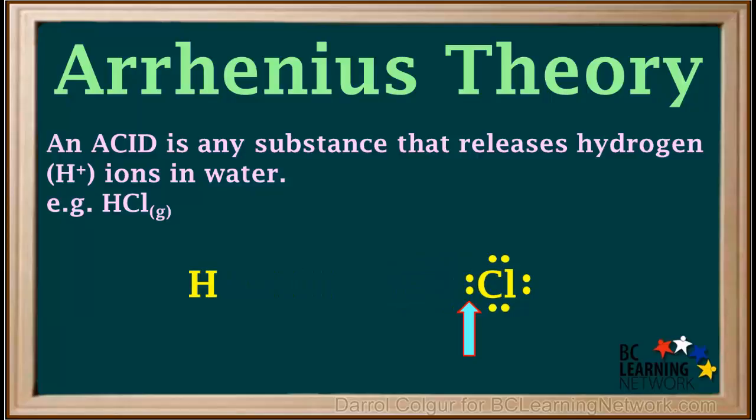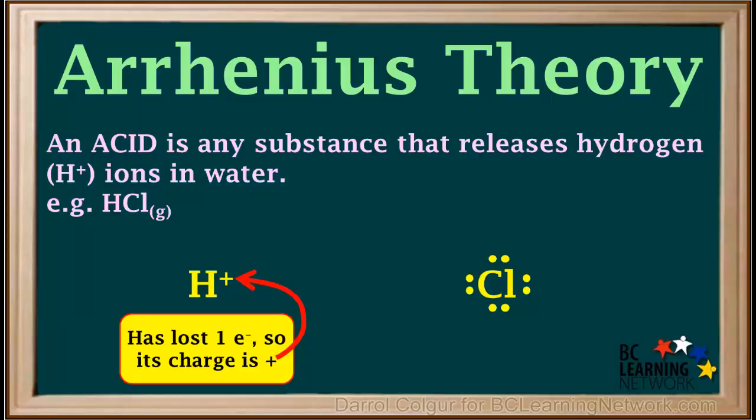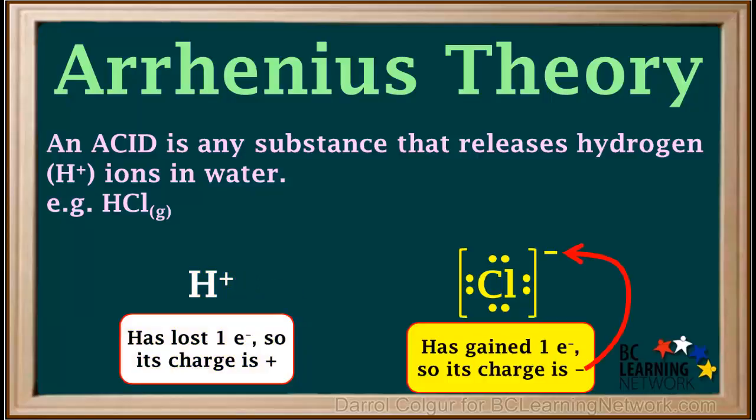The chlorine atom being more electronegative than the hydrogen atom takes both of the shared electrons with it. Because the hydrogen atom has lost its electron, it acquires a positive charge. And because the chlorine has gained one electron, it acquires a negative charge. It is now called the chloride ion, or Cl-.